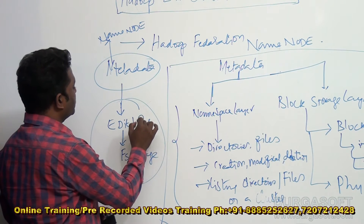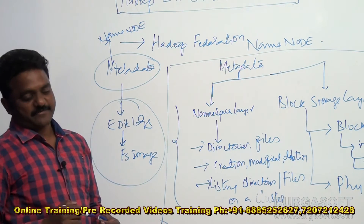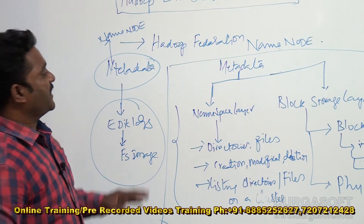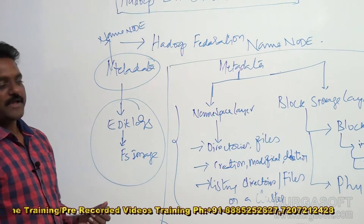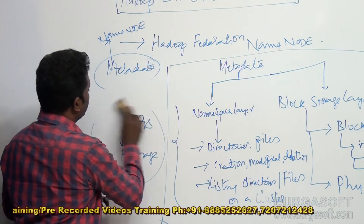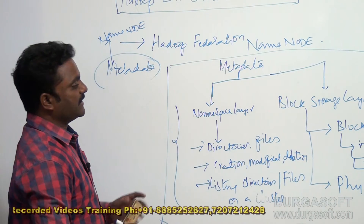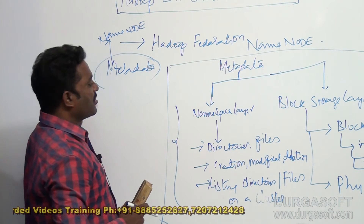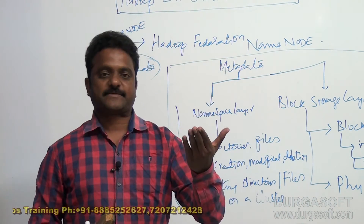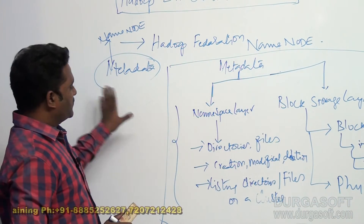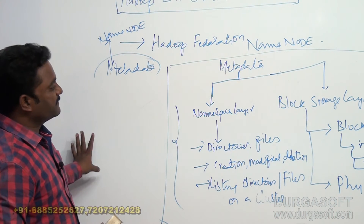To revise: metadata is a combination of edit logs and the file system image. We will also see what is the role of the edit log and the file system image in coming sessions. Inside metadata, we have the namespace layer and the block storage layer. The namespace layer takes care of information about directories and files and file-level operations such as creation, modification, and deletion.